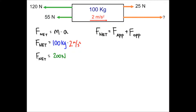Since the acceleration is to the right, we know that the net force is going to be towards the right also. I'm going to put a little arrow towards the right to indicate that the vector quantity of force is 200 Newtons to the right. So we know this object is being forced in the net direction to the right with an amount of 200 Newtons.